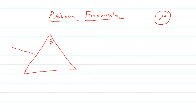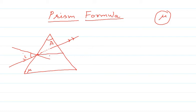First of all, we draw a normal here. This is our angle of incidence and this is the incident ray. The prism has refractive index mu and is denser compared to the surrounding medium. We are talking about the condition of minimum deviation, so whenever we have minimum deviation, the refracted ray inside the prism travels parallel to the base of the prism.